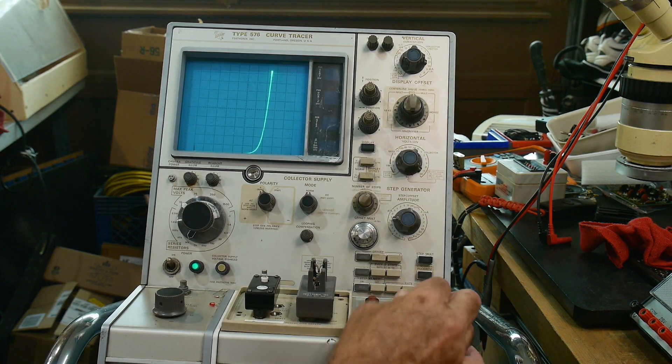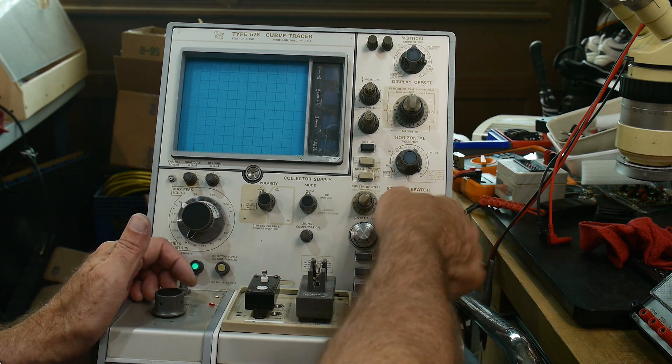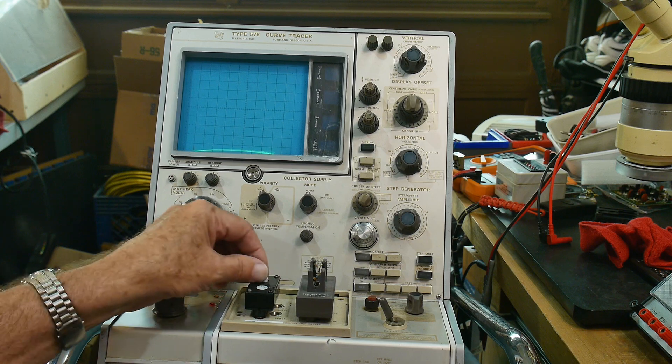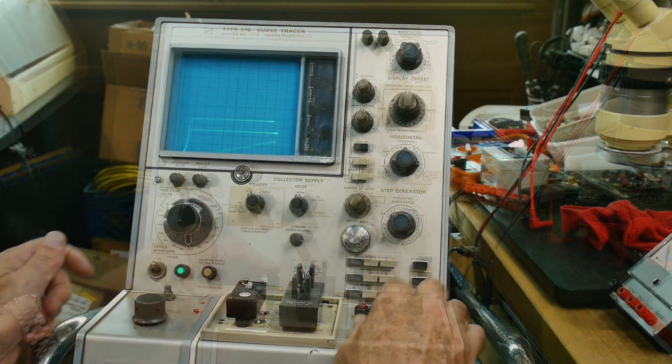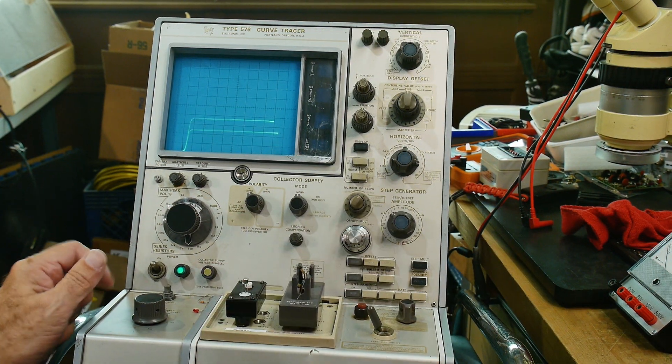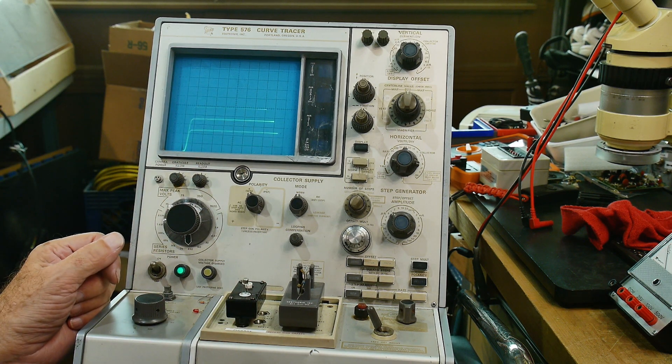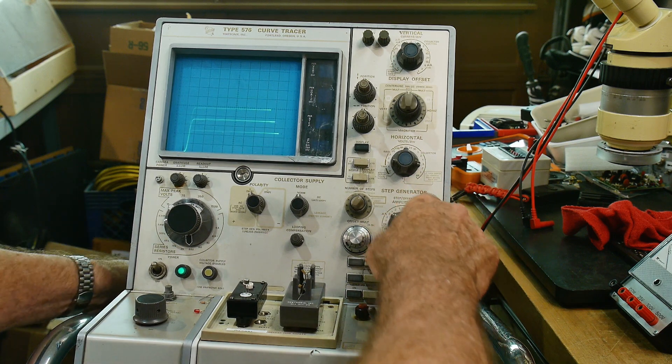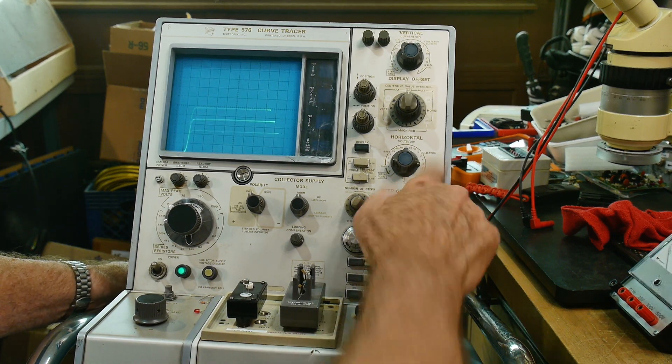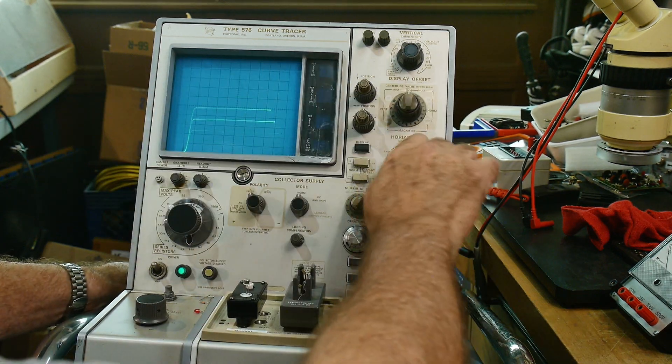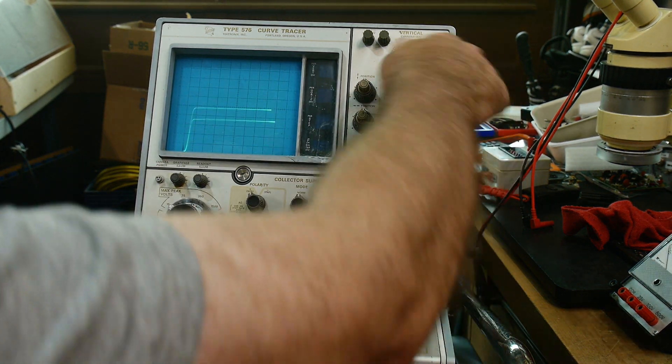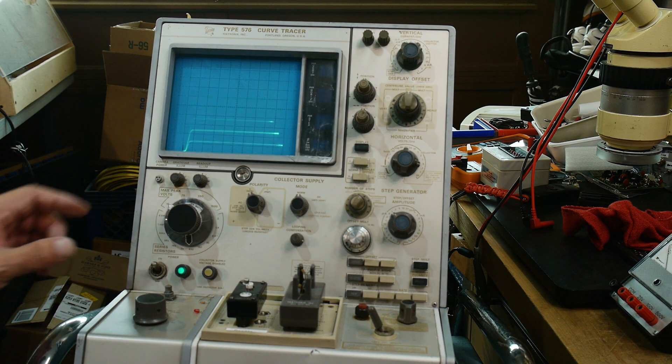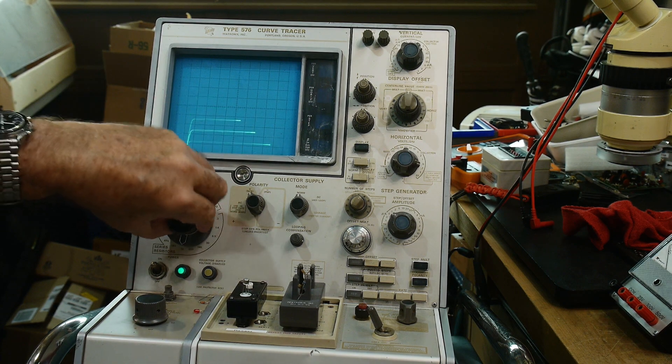I don't know if I can test a transistor yet or not. I'll have to work on that one. All right. There we go. We have a PNP in the socket and we have a curve trace. We can change the step amplitude, which is what this does. We can change the horizontal amplitude, which is what this one does. Change the vertical amplitude, which is what this one does. We can change the load resistor, which is what this one does.